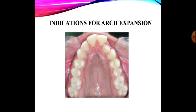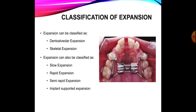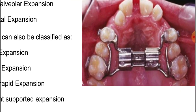The various indications of arch expansion: we do arch expansion in patients where we need to correct the posterior crossbite, patients having a V-shaped or narrow palatal vault, patients being prepared for a bone graft especially in cleft alveolus, patients with minimal crowding in the upper arch, and patients having dark buccal corridors. All these are indications for arch expansion.